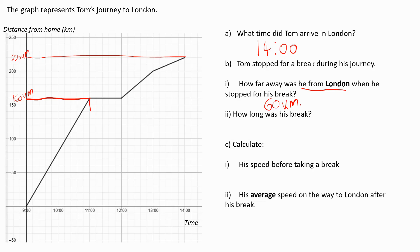His break was from 11 o'clock until 12 o'clock, so he had a break for exactly one hour. His speed before taking the break can be worked out using the formula speed equals distance divided by time. The distance travelled before taking the break is 160 kilometres, and the time that he needs to reach this distance is exactly 2 hours, 9 to 11. This gives me an average speed of 80 kilometres per hour.